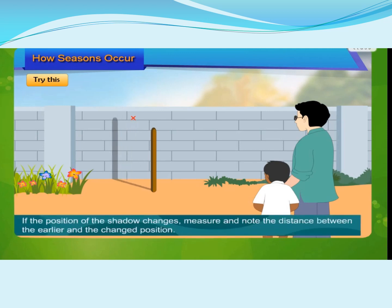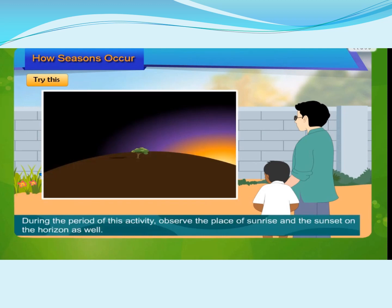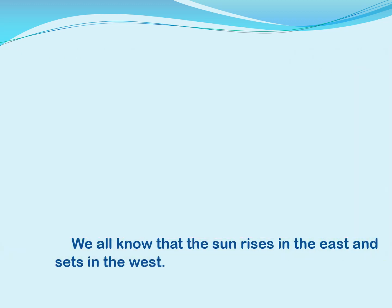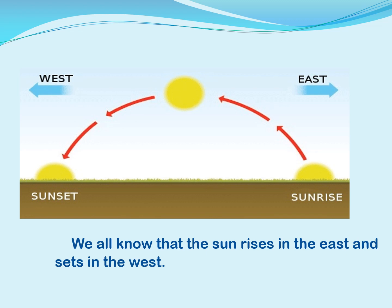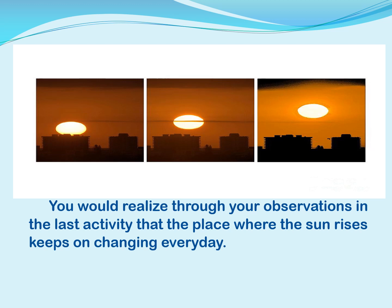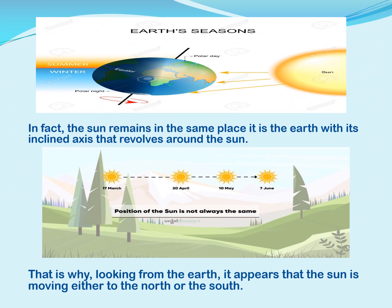After the observation, mark the position of the shadow for that date. If the position of the shadow changes, measure and note the distance between the earlier and the changed position. During this activity, observe the place of sunrise and sunset on the horizon as well. We all know that the sun rises in the east and sets in the west. You would realize through your observations that the place where the sun rises keeps on changing every day. In fact, the sun remains in the same place — it is the Earth with its inclined axis that revolves around the sun, and that is why, looking from the Earth, it appears that the sun is moving either to the north or to the south.